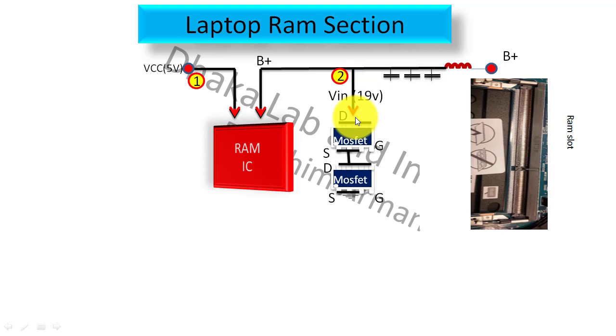To work this MOSFET, gate switching is very important. After getting these voltages B+ and VCC, IO will enable RAM IC. After enabling from IO, there will be switching of those two MOSFETs.